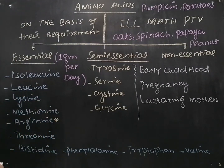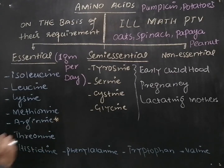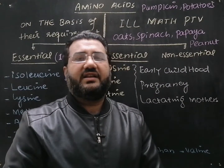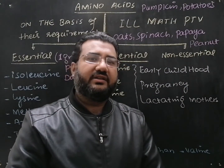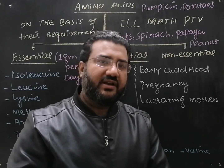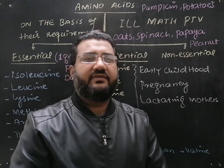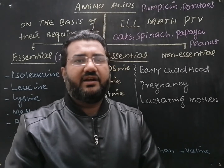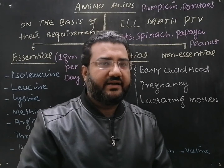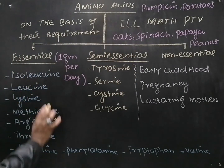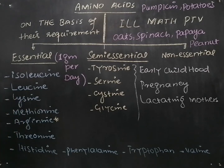These are the 10 essential amino acids. I have placed an asterisk on arginine, which shows that arginine is semi-essential. Arginine is required only during early childhood, but when a person reaches adulthood, the body itself can synthesize arginine and no more is required through the diet. So the pure essential amino acids are actually nine.